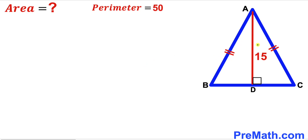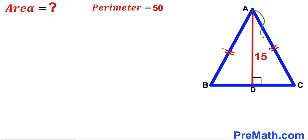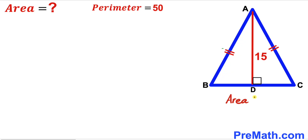Welcome to pre-math. In this video we have got this isosceles triangle ABC along with this perpendicular AD, as you can see in this given diagram, such that these two side lengths AB and AC are equal in length. The perpendicular AD is 15 units long, and furthermore the perimeter of this triangle has been given to us as 50 units. Our task is to calculate the area of this blue triangle ABC.